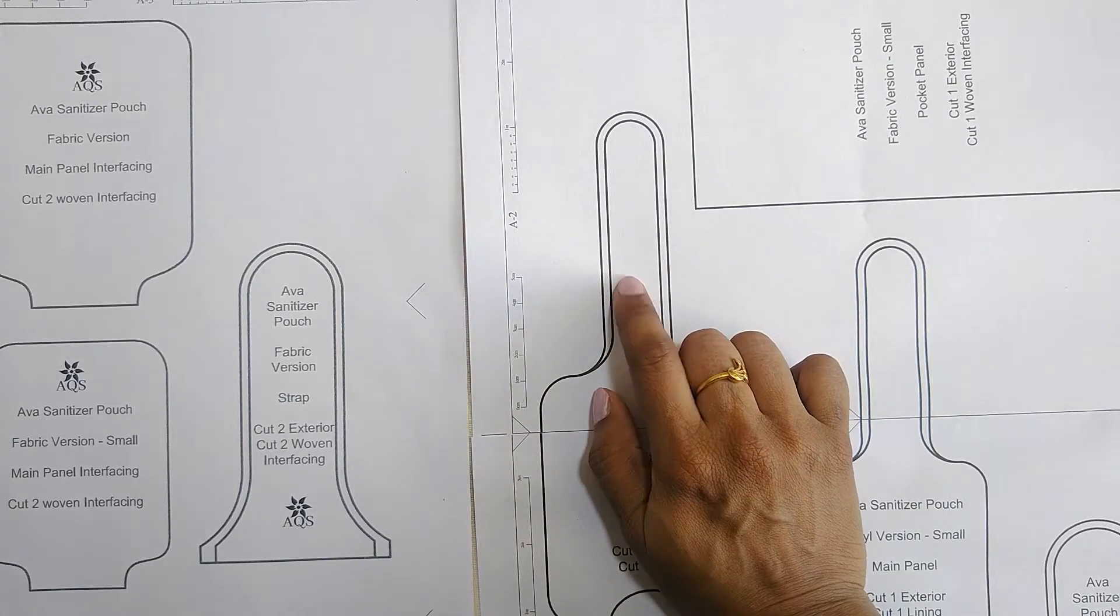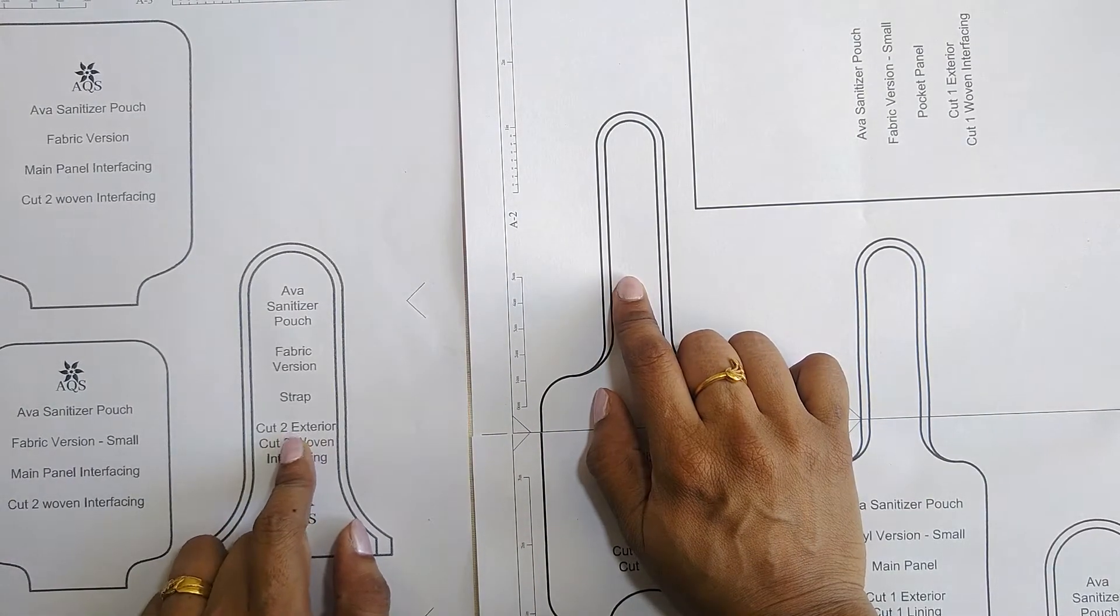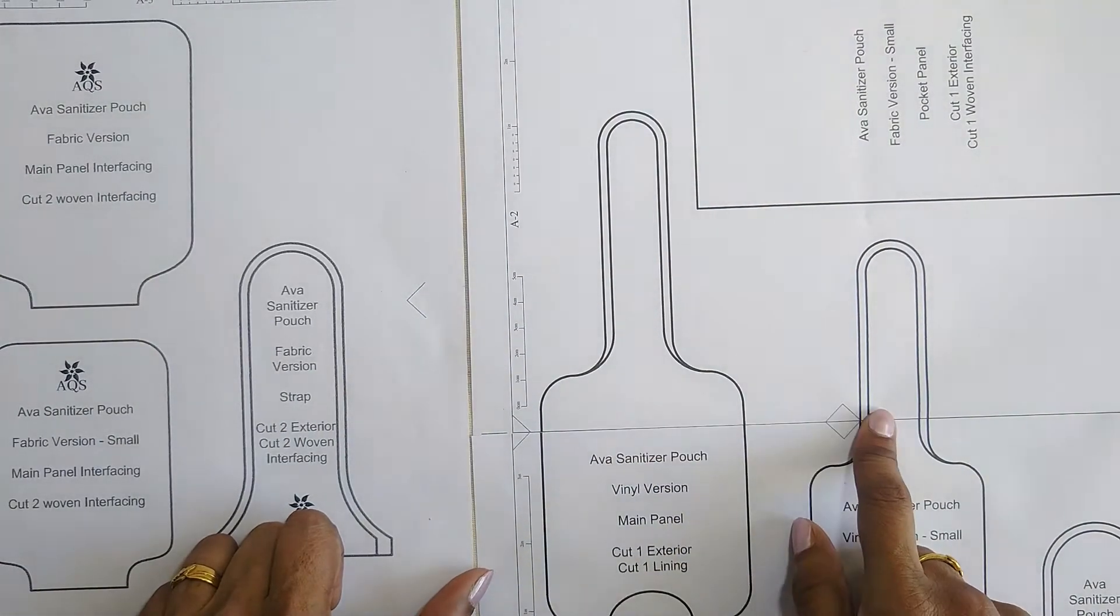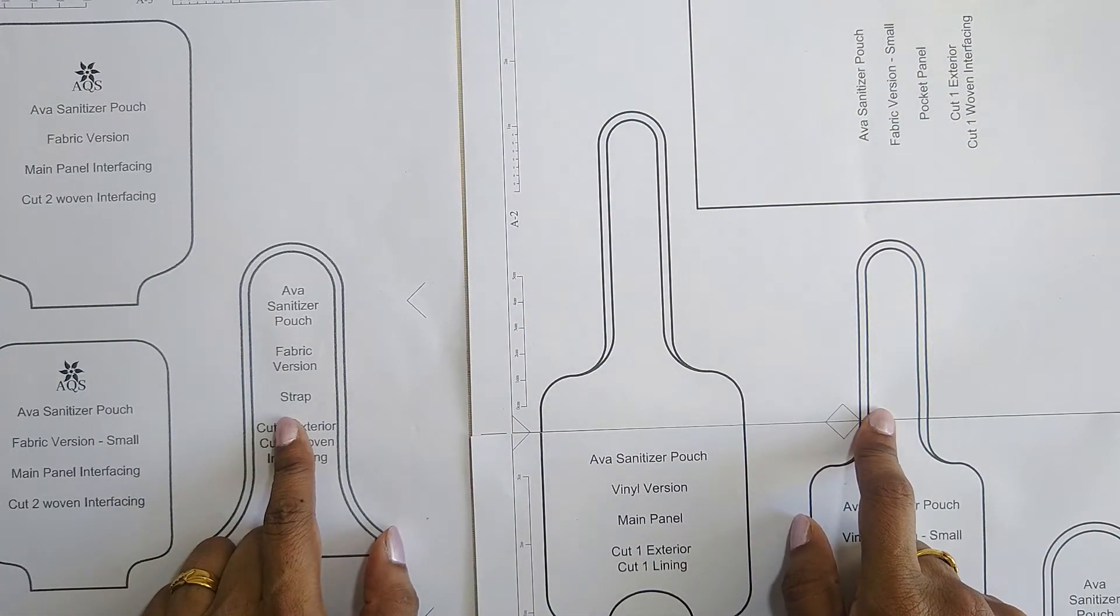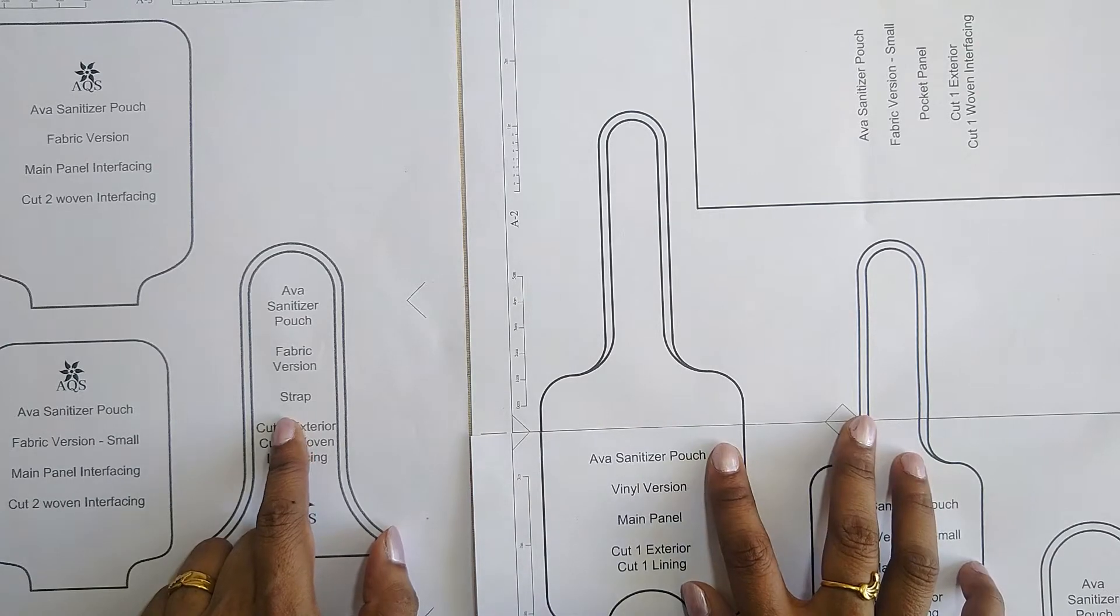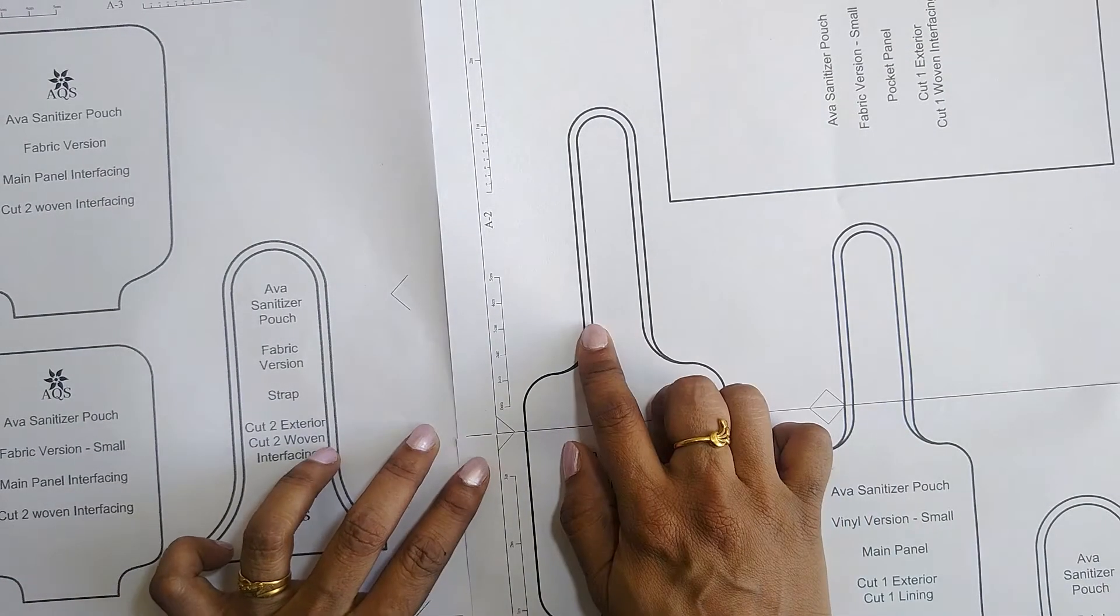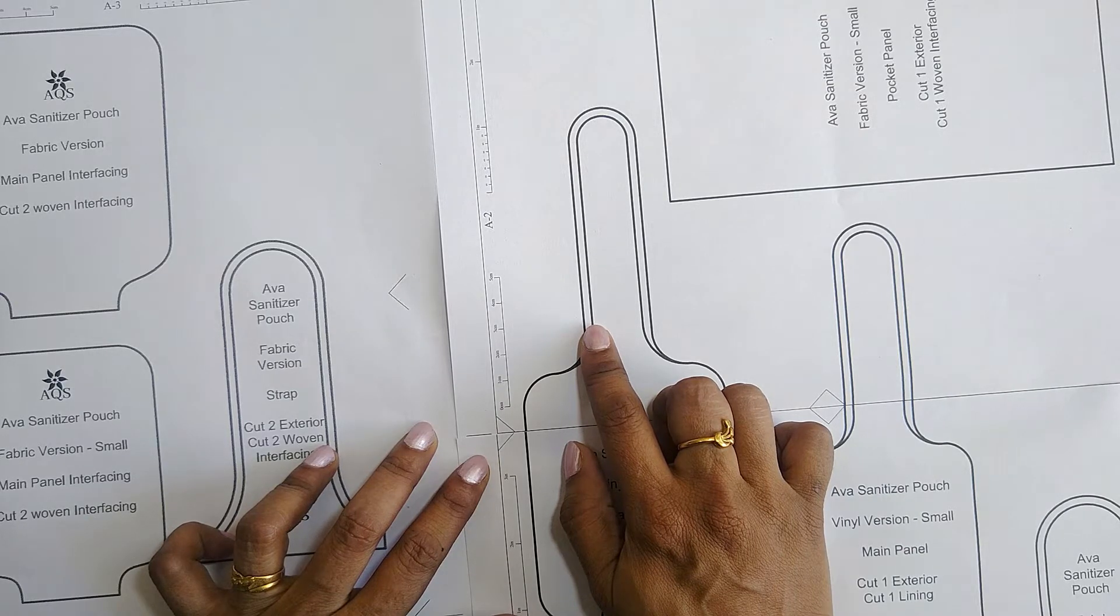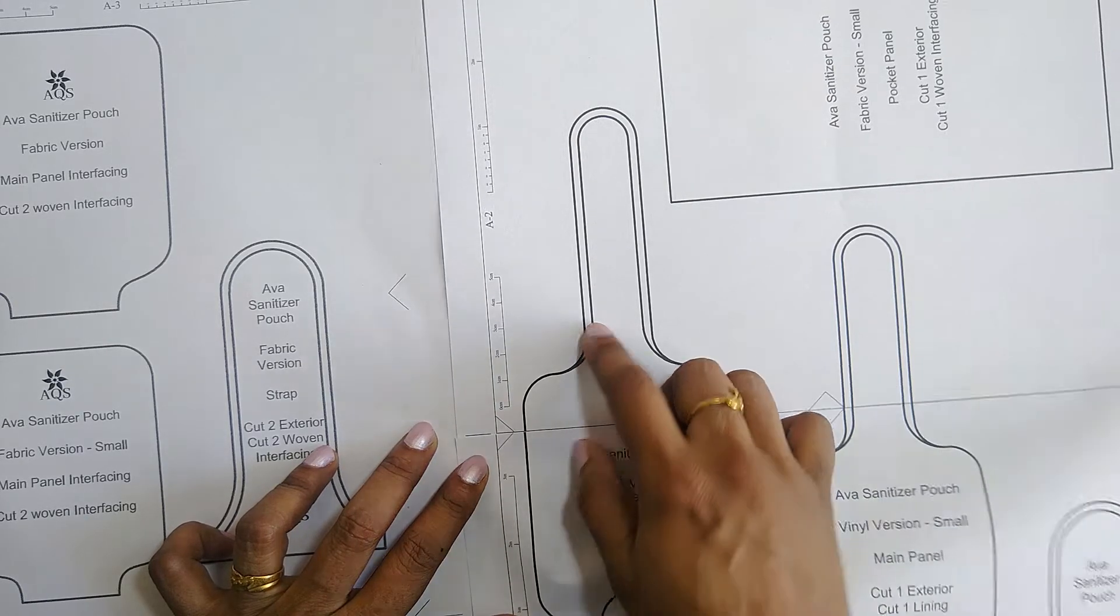The strap portion for both the vinyl and fabric versions has two cut lines for the small as well as the large pattern pieces. This has been provided for different sizes of hardware.